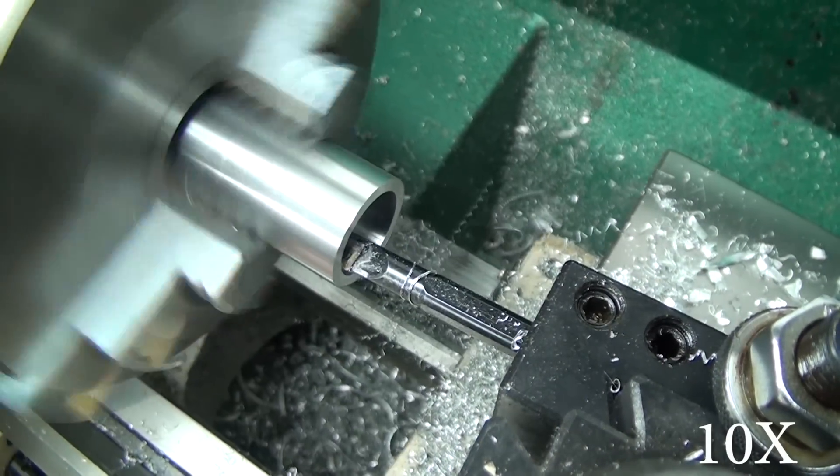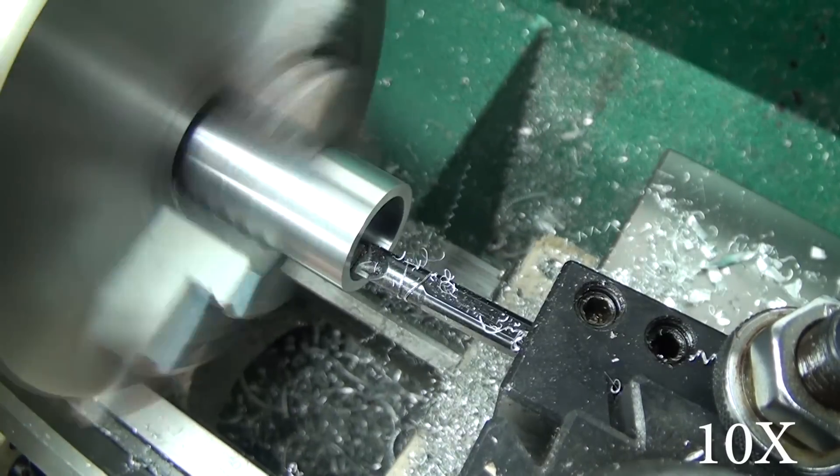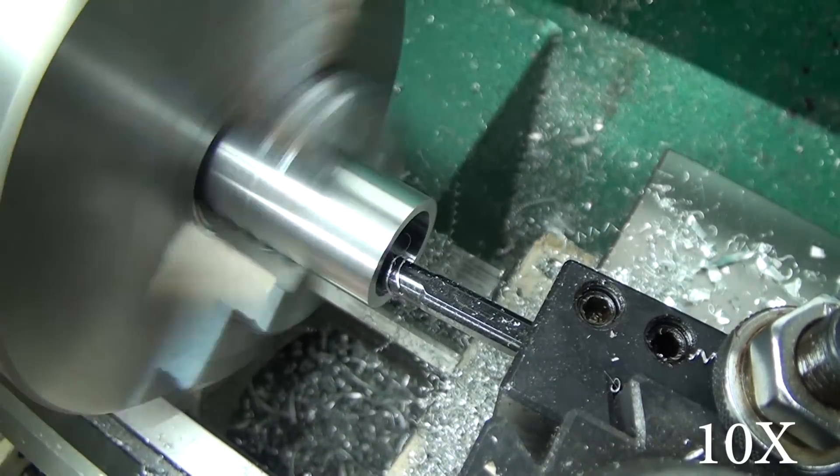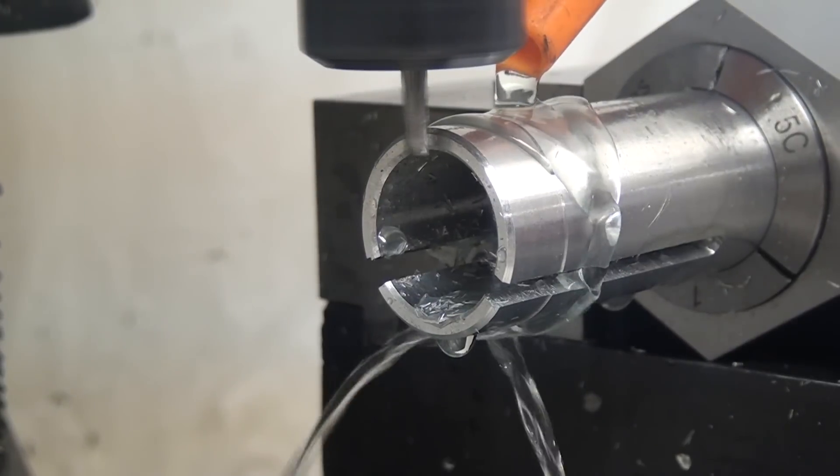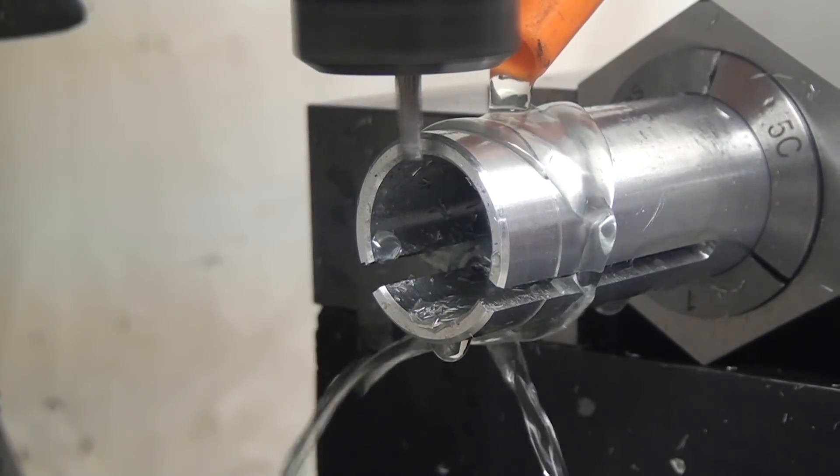I believe the 20mm ball screws are either a half millimeter undersized or oversized. I want to say they're a half millimeter under, so you end up turning it to like 19 and a half millimeters.